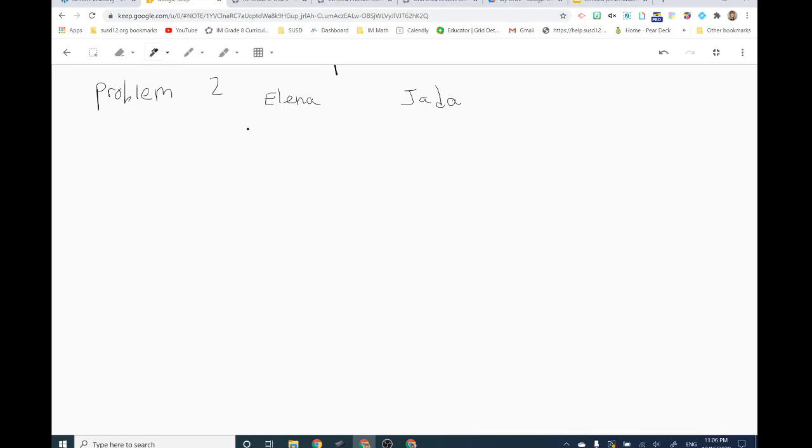Elena babysits. Her earnings are given by the equation Y equals 8.40X. Write that down in your notes. Where X represents how many hours she worked. Let's write that down too. X equals hours. And Y represents how much money she earns. I'll put that right here. Y equals money.